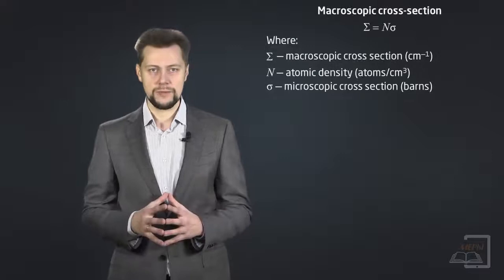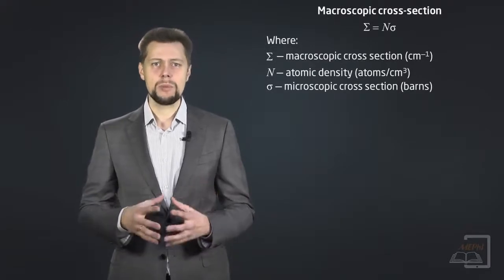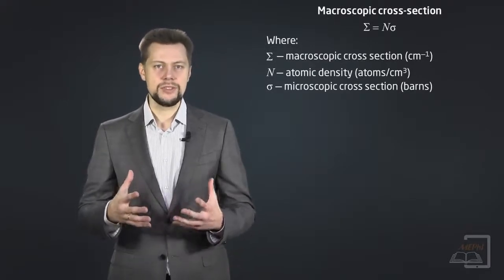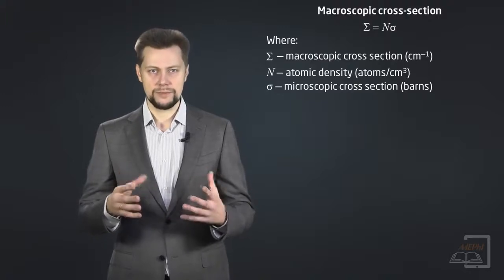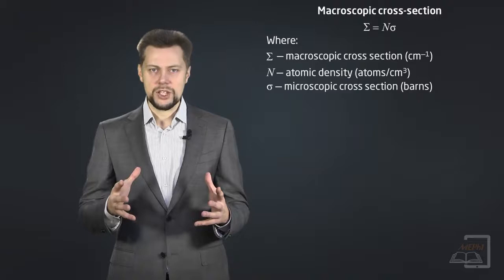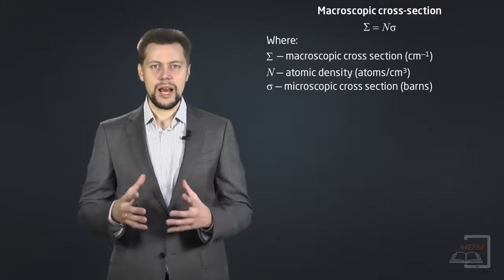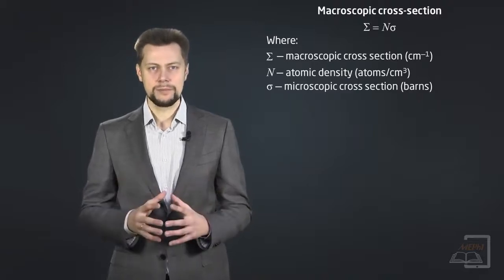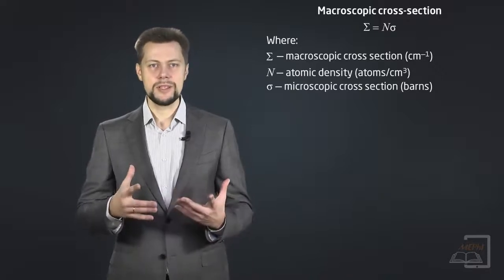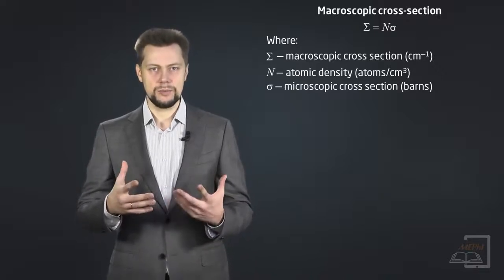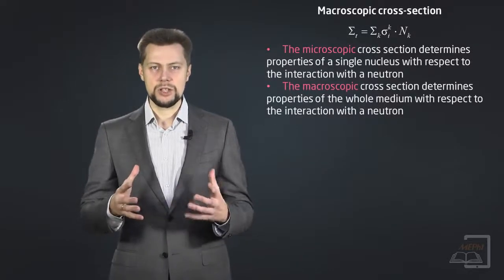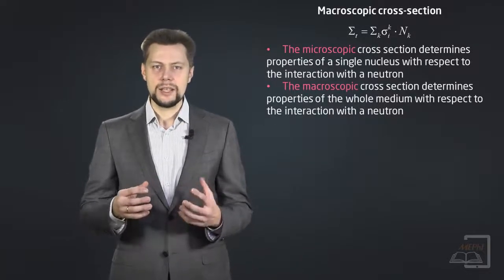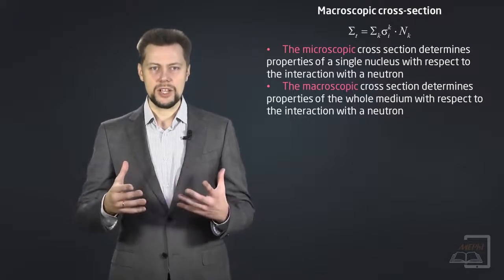Macroscopic cross-section. Defined as probability of incident neutron interacting with the target nucleus per unit length of travel of incident neutron. The macroscopic cross-section is designated by Greek uppercase Sigma and is expressed in cm⁻¹. To calculate the macroscopic cross-section, you need nuclear density multiplied by microscopic cross-section.